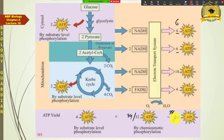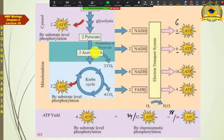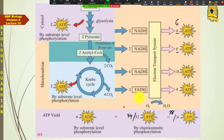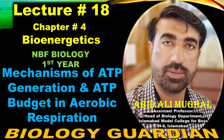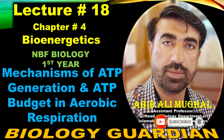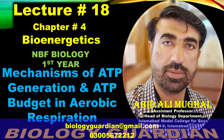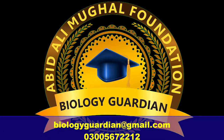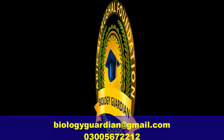So you can see that prokaryotes have 2 more ATPs and eukaryotes have 2 fewer ATPs. In conclusion, the total and net gain of ATP — the ATP budget — in aerobic respiration from the breakdown of one glucose molecule should now be very clearly understood. If you have any confusion, you can ask.